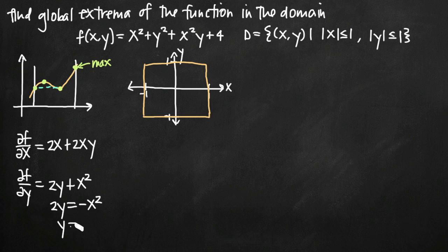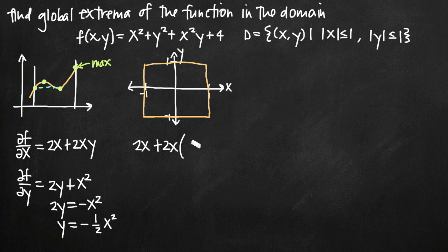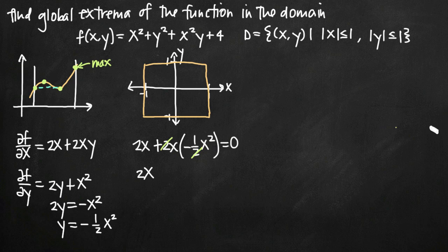I plug negative one-half x squared in for y in the first equation to get an equation only in terms of x: 2x plus 2x times negative one-half x squared equals zero. Simplifying, I get 2x minus x cubed equals zero.